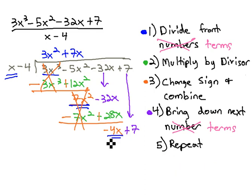This time, we're dividing negative 4x by x. This gives us negative 4, and we can multiply negative 4 times x to get negative 4x, and negative 4 times negative 4 to give us positive 16.